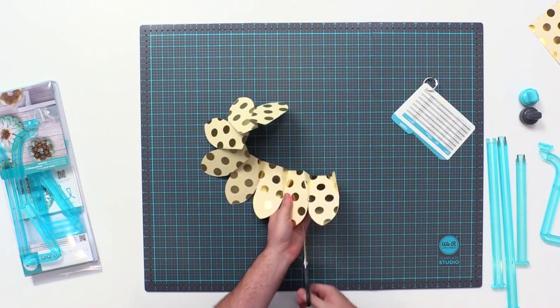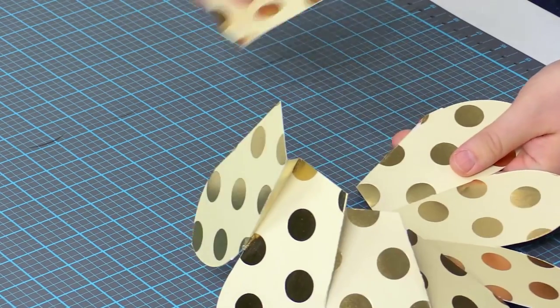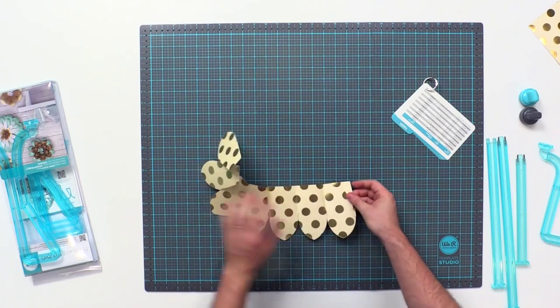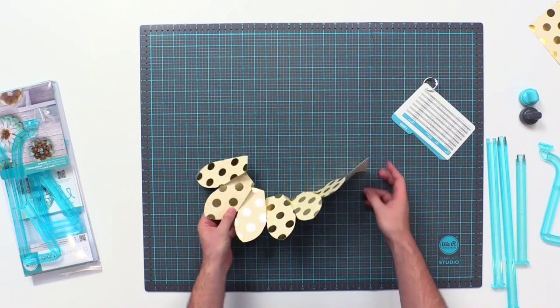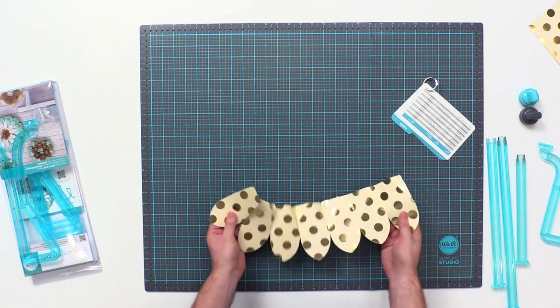To cut it down, you're just going to cut along the vertical piece of the vertical score line. You can cut one, two, three petals off. The more petals you cut off, the more dimensional it'll be. And now I can glue it together.